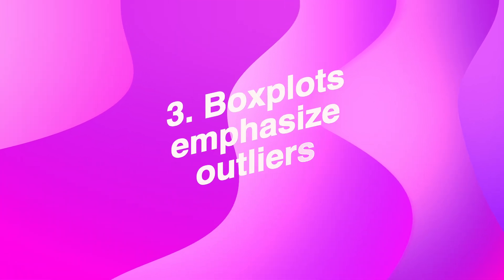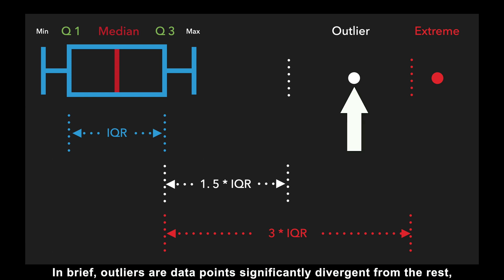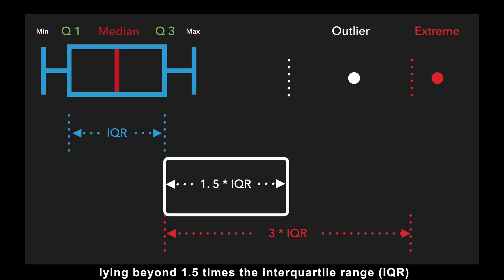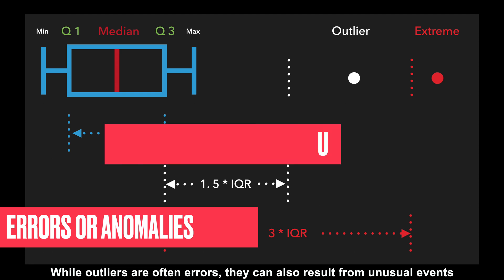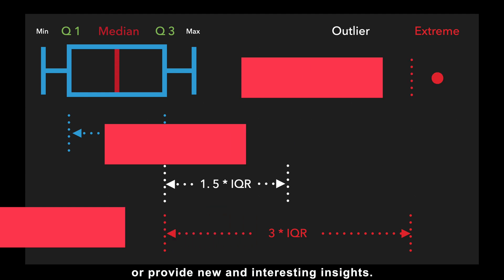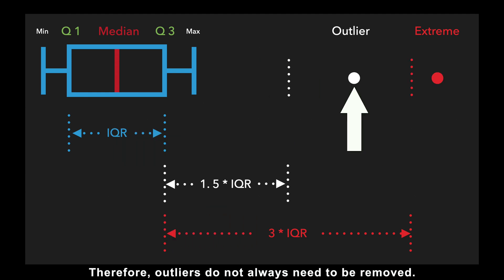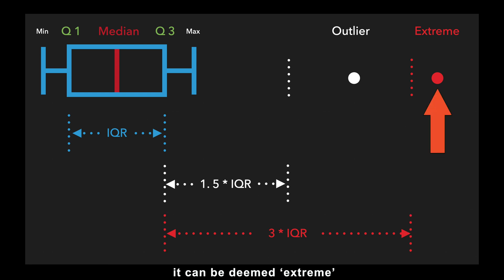Box plots emphasize outliers. But what is an outlier and why does it matter? In brief, outliers are data points significantly different from the rest, lying beyond one and a half times the interquartile range, from the nearest box hinge. While outliers are often errors, they can also result from unusual events or provide new and interesting insights. Therefore, outliers do not always need to be removed. However, if a point falls outside three times the interquartile range, it can be deemed extreme and should most likely be excluded from the dataset.